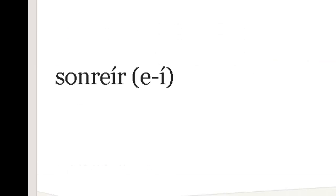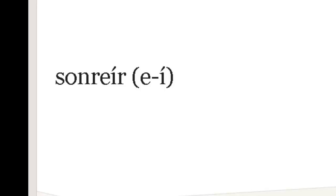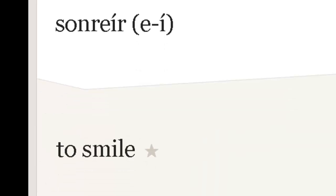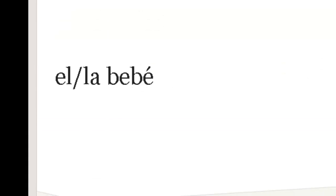Sonreír. Notice it's an i-to-i stem change. This is kind of unusual because the stem change is there at the end, and that 'i' is accented. We will work on conjugating that in class. Sonreír — to smile. Sonrío, sonríes, sonríe. Next: el bebé. Repite — el bebé, la bebé. Notice it's 'bebé' for either one. Some places you'll hear people say 'la beba,' but that's not right. El bebé or la bebé — baby.